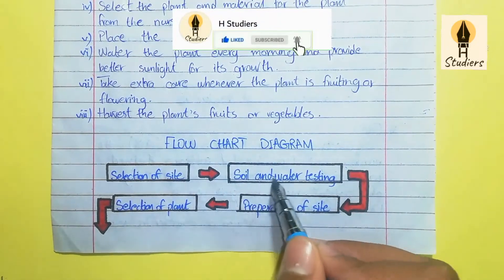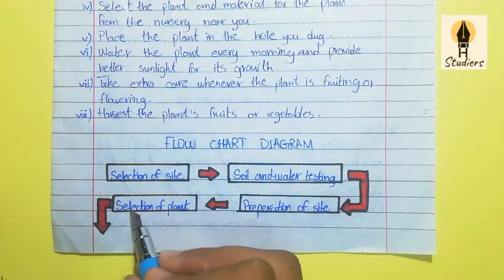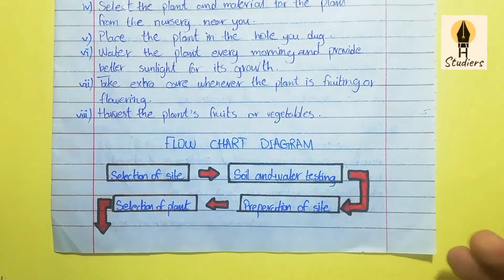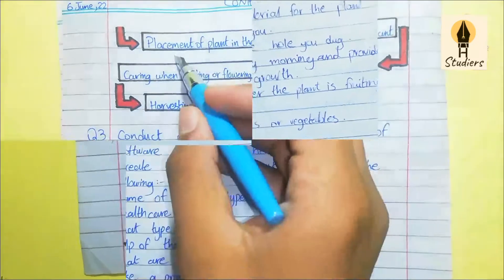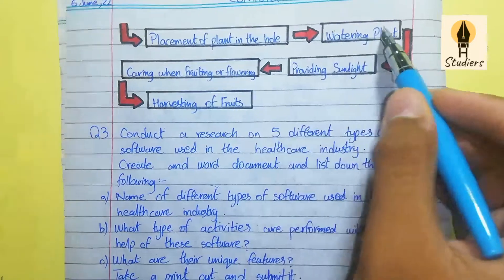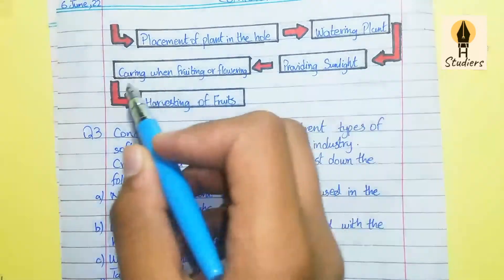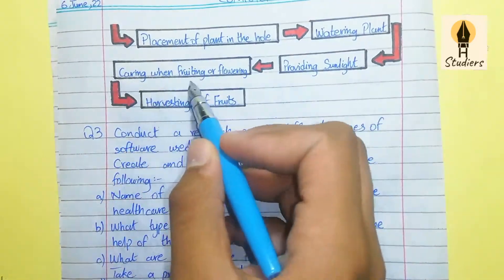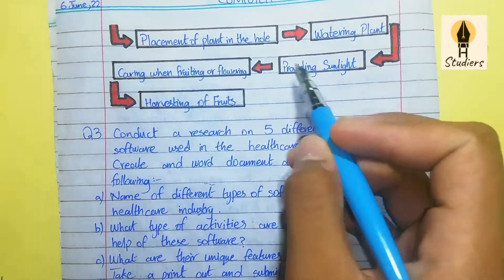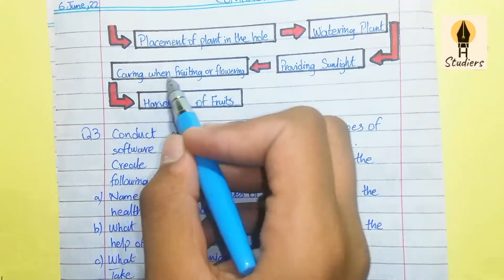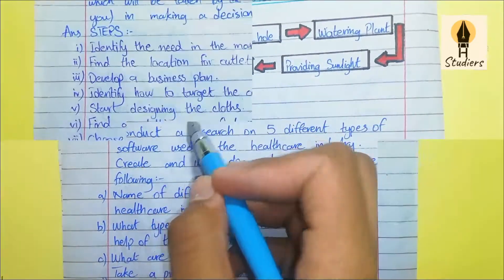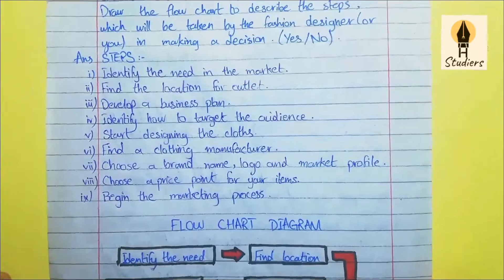The flowchart steps are: Selection of site, Soil and water testing, Selection of plant, Preparation of site, Placement of plant in the hole, Watering the plant, Providing sunlight, Caring when fruiting or flowering, and Harvesting of fruit.